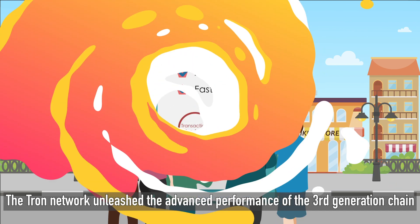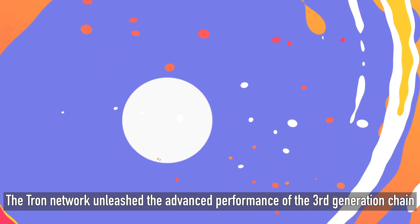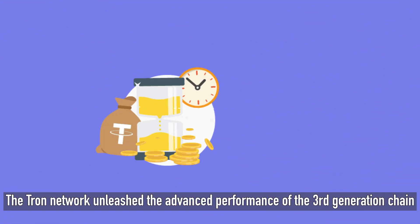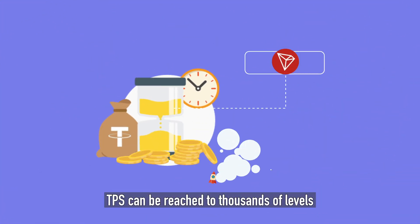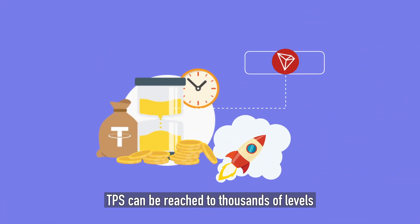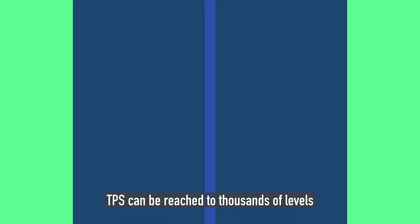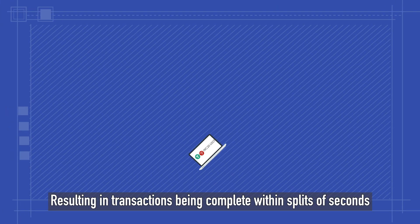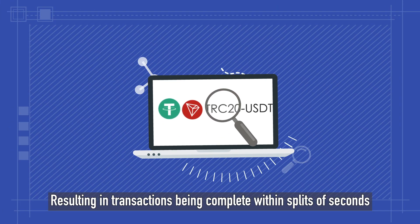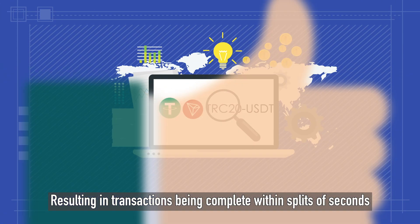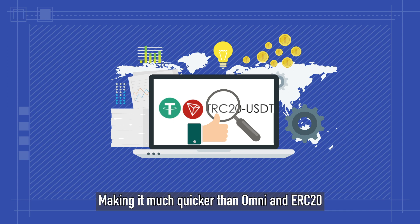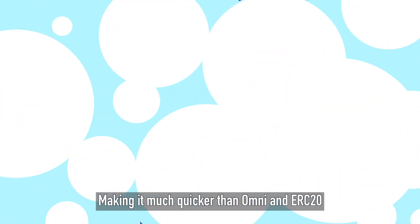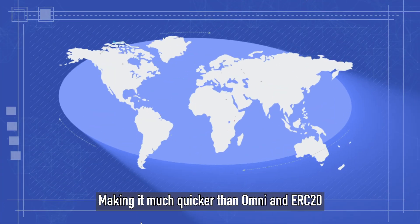The TRON network unleashed the advanced performance of the third-generation chain. TPS can reach thousands of levels, resulting in transactions being completed within splits of seconds, making it much quicker than Omni and ERC-20.